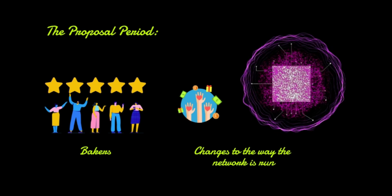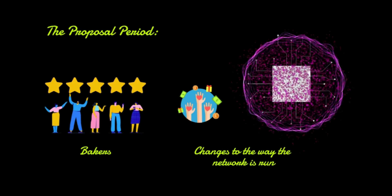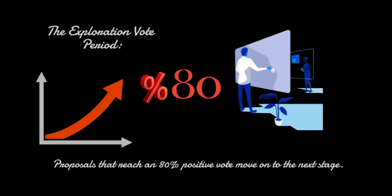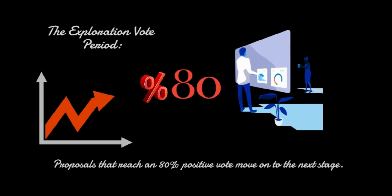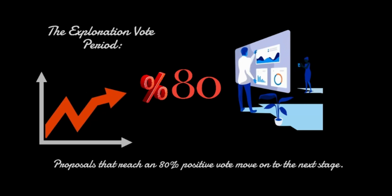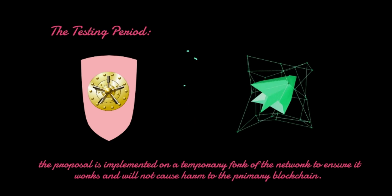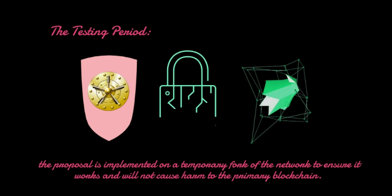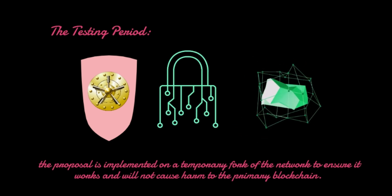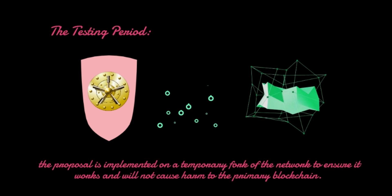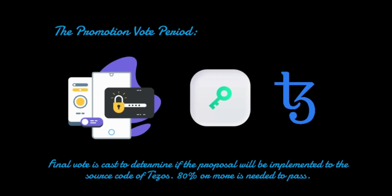The proposals receiving the most votes move on to the next stage — the exploration vote period. Proposals that reach an 80% positive vote move on to the testing period, where the proposal is implemented on a temporary fork of the network to ensure it works and will not cause harm to the primary blockchain.